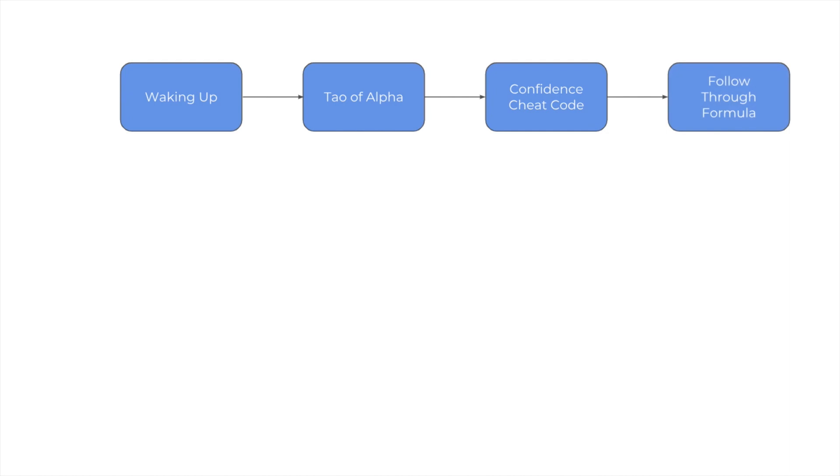And finally, in the last lesson, we'll be talking about the follow-through formula. This will reveal the secret to effortless self-discipline that gives you extreme mental clarity and laser-sharp focus without relying on willpower. These are the first four lessons of the first module titled Mental Mastery.